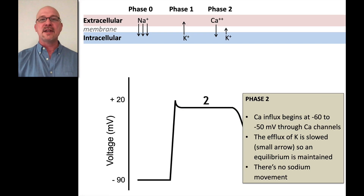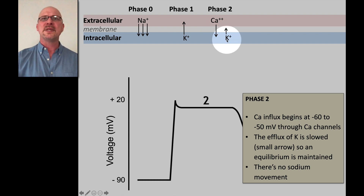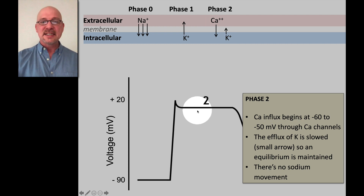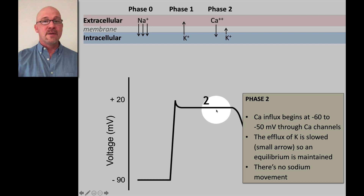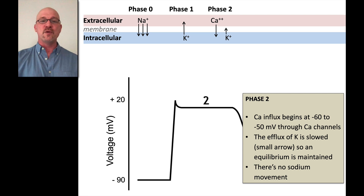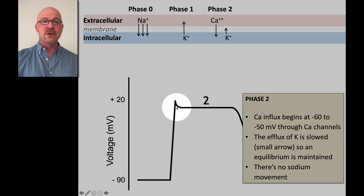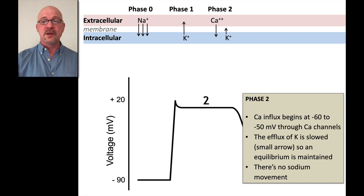In phase two, we have our plateau. Potassium continues to exit the cell, but calcium starts rushing in, extending our positive phase and keeping the resting membrane potential above zero for a while. That plateau allows the heart to get a good squeeze in. There's no sodium movement at this point because the sodium channels went up to positive 20 and haven't yet recovered — they need to get back down to around minus 65 before they can participate again.